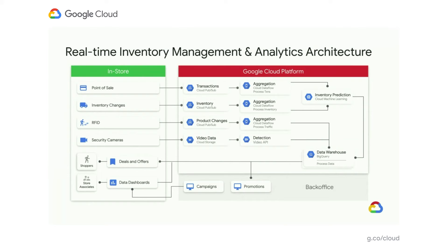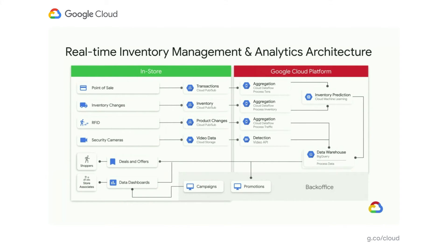For a sample edge architecture — a real-time inventory management and analytics architecture — if built on cloud-only, you'd have point-of-sale, inventory, and RFID systems in the store, with capabilities in Google Cloud Platform using Cloud Pub/Sub aggregation, analytics, and video APIs. What Anthos gives you is a new architecture where you can move some of those capabilities in-store, closer to where you are, to meet latency and sensitivity requirements while still using your platform of choice.